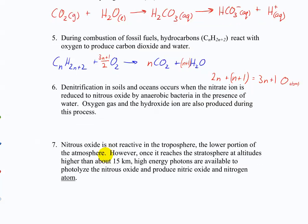Denitrification in soils and oceans occurs when nitrate ion, NO3 minus, is reduced to nitrous oxide by anaerobic bacteria in the presence of water. Oxygen gas and the hydroxide ion are also produced during this process. Is that balanced? What do you want to balance first? Hydrogen. Sure. How do you balance hydrogen? Add a 2 in the LH. Right, we need 2 hydroxides to balance with the 2 H's from the water on the other side.